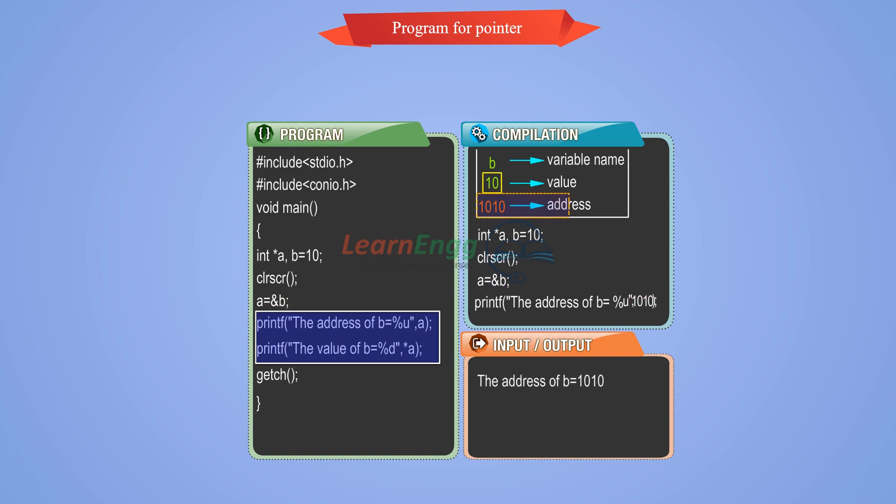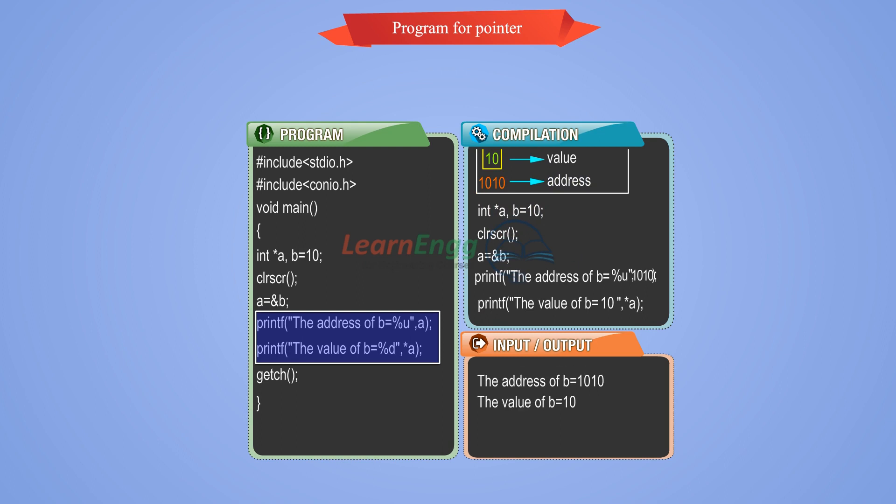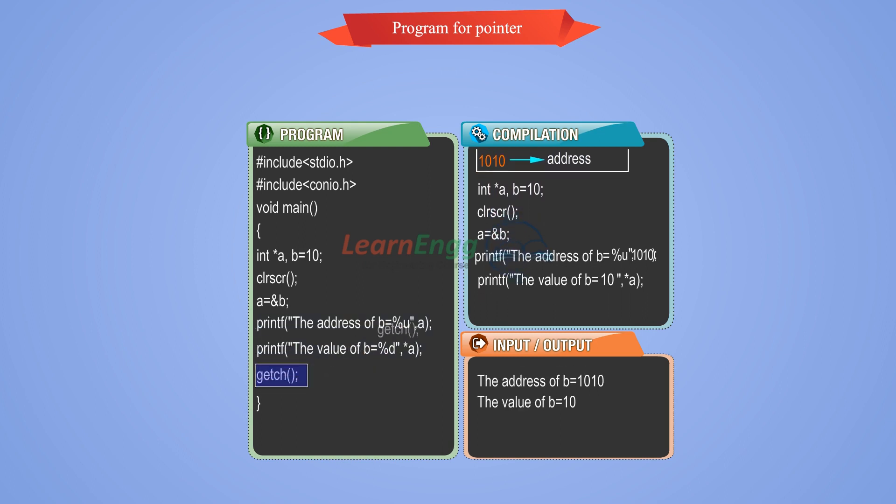The value of A is 10, whereas asterisk A accesses the variable B value 10. GetCH function is used to exit the console screen.